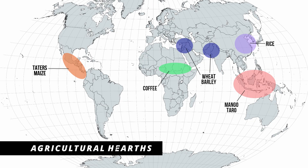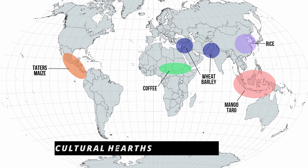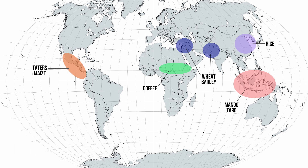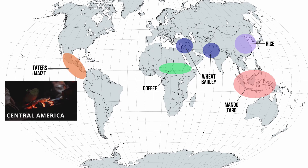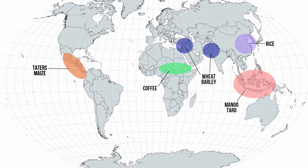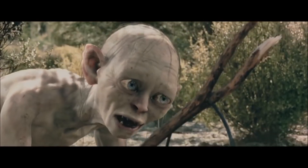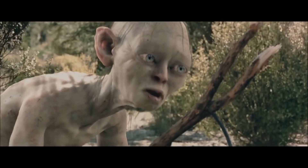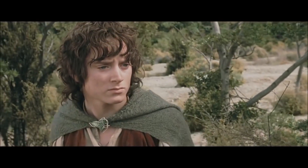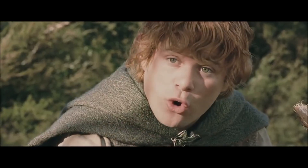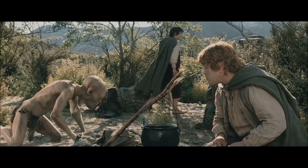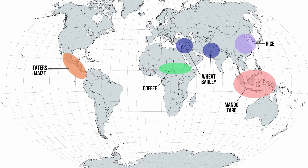Let's throw it back 12,000 years to the Neolithic era. In reference to the agricultural hearths, you should know the main crops from each hearth. First one being maize and potatoes from the Central American region. Maize is a form of corn, and taters — potatoes. Boil them, mash them, stick them in a stew. Obviously they're potatoes. Then in Africa, you have your coffee, aka liquid gold.